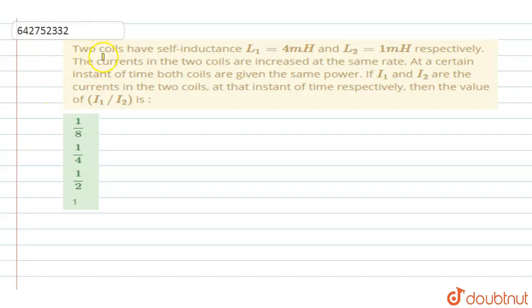We have two coils in the question with different self-inductance. The self-inductance of the first coil is 4 mH and the second coil has a self-inductance of 1 mH respectively.